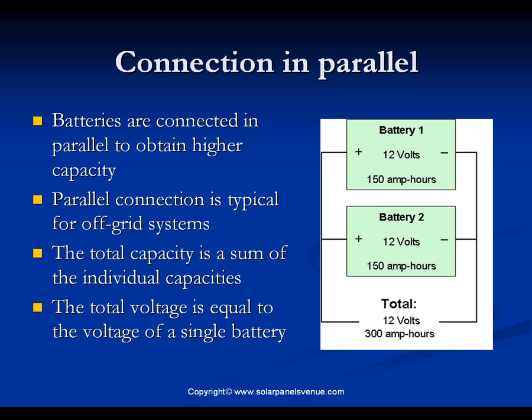The second way of battery connection is in parallel. We connect batteries in parallel to obtain higher capacity. A parallel connection is typical for off-grid systems. The total capacity is the sum of the individual capacities, while the total voltage equals the voltage of a single battery.